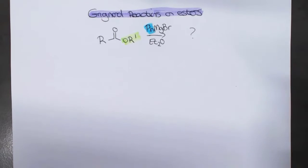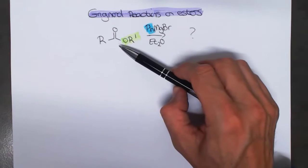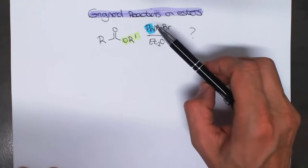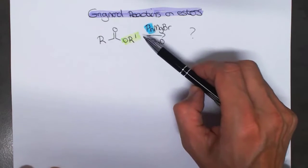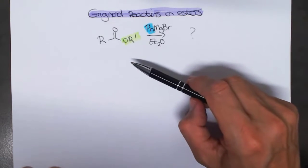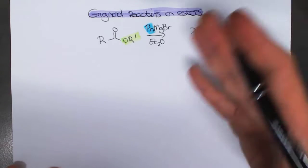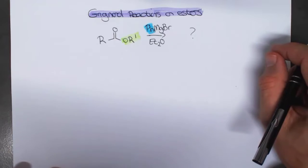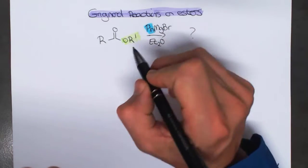I want to now look at how Grignard reagents react with esters. In the last lecture we showed that we could take a nucleophile and react it with an ester. If that nucleophile was an OH we would do a hydrolysis. If it was an alkoxide we could do a trans-esterification, and if we used an amine — a mild but good nucleophile — we can get an amide being formed. They all have the same pattern of a nucleophile adding to an ester.